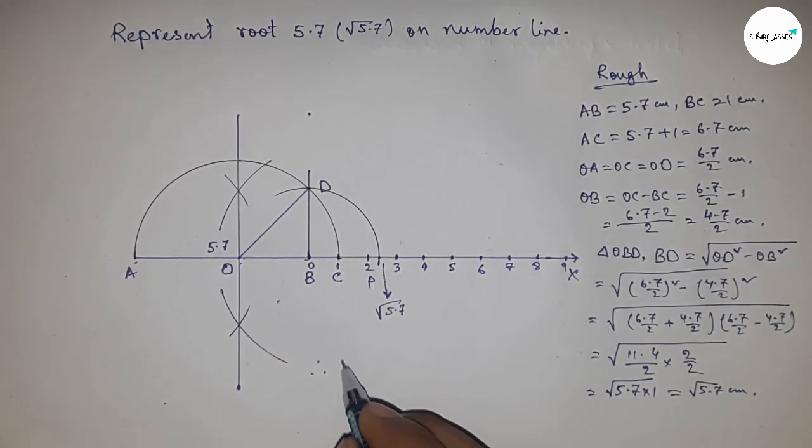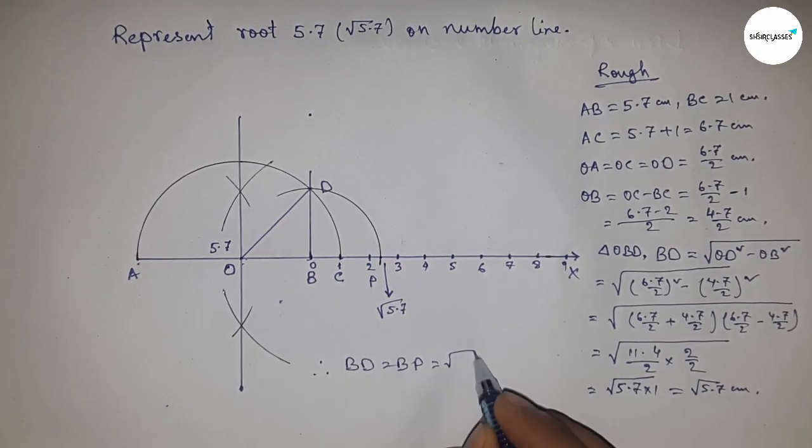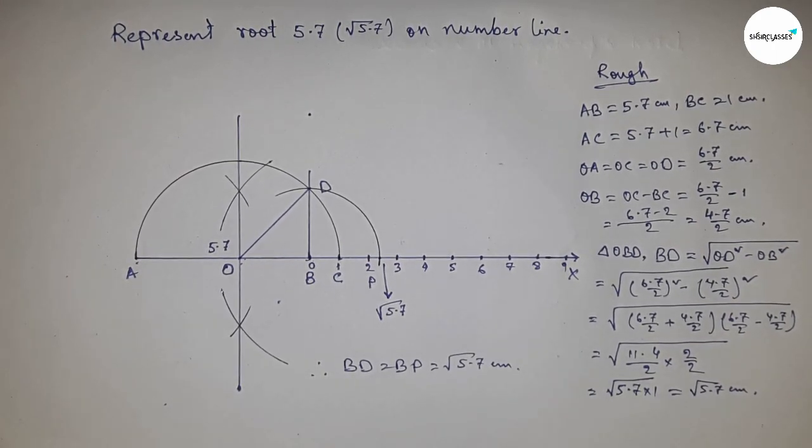Therefore, distance BD and BP are equal to root over 5.7 centimeters. That's all. Thanks for watching. Please subscribe, like, and comment on my video.